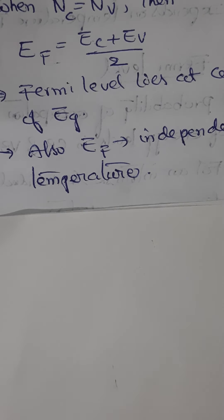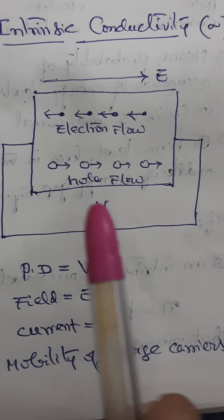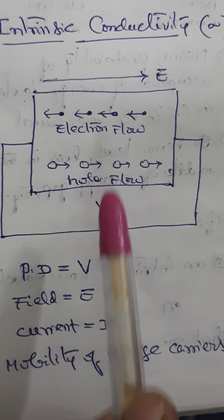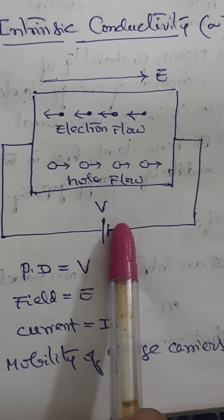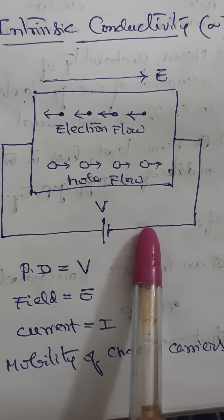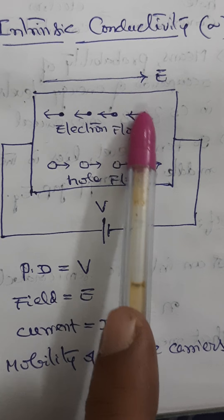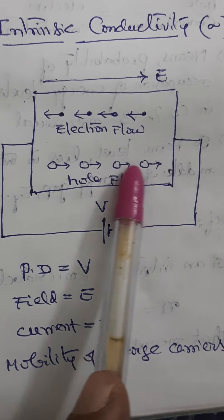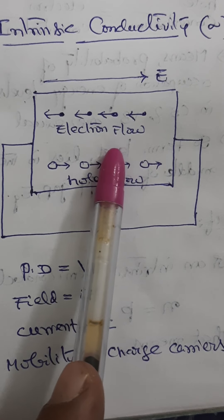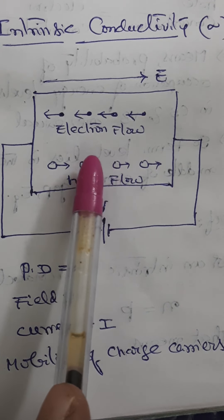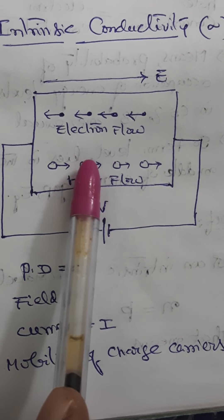Now how do we calculate the conductivity of an intrinsic semiconductor? Electrical conductivity, sigma, is what we call intrinsic semiconductor conductivity. For that, we are considering an intrinsic semiconductor to which a potential difference of V volts is applied. This potential difference naturally establishes an electric field E, and the charge carriers are forced to drift in their respective directions to constitute an electric current I.